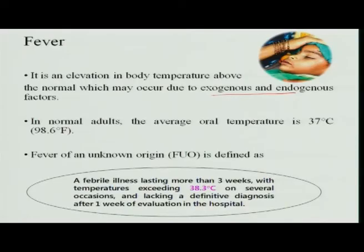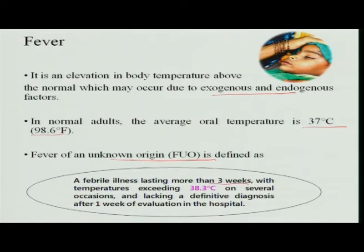In normal adults, the average oral temperature is 37 degrees centigrade, which is 98.6 degrees Fahrenheit. Fever of unknown origin is defined as a fever lasting more than three weeks with temperature exceeding 38.3 degrees centigrade. On several occasions, lacking a definitive diagnosis, even after one week of evaluation, we are unable to diagnose the cause — that is fever of unknown origin.